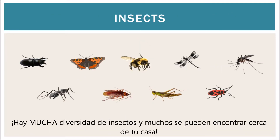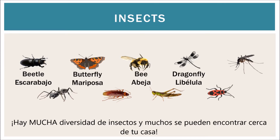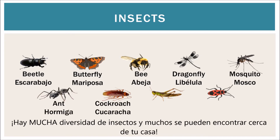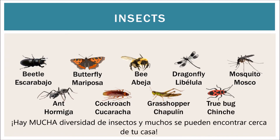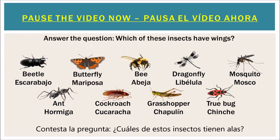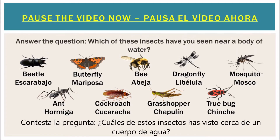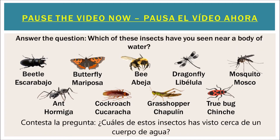There is a huge diversity of insects and many can be found right by your house. For example, a beetle, a butterfly, a bee, a dragonfly, a mosquito, an ant, a cockroach, a grasshopper, or a true bug. Pause the video now and answer this question: which of these insects have wings? Now pause the video and answer this question: which of these insects have you seen near a body of water?